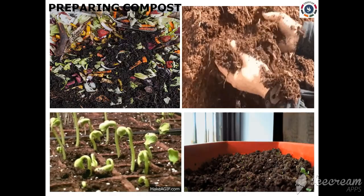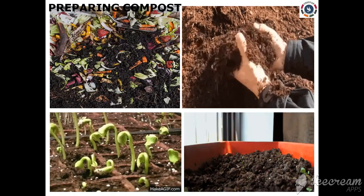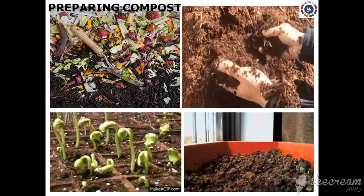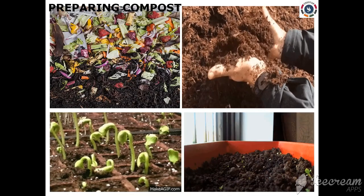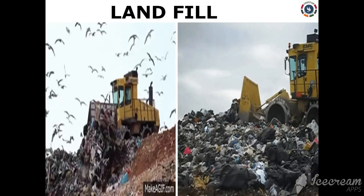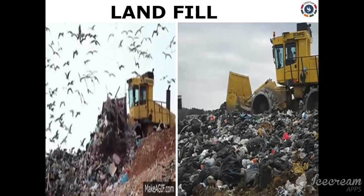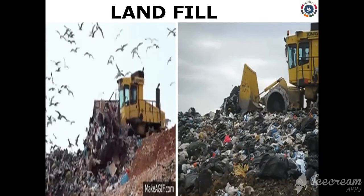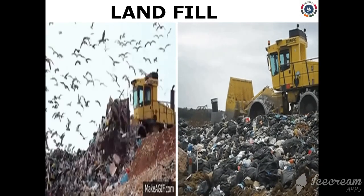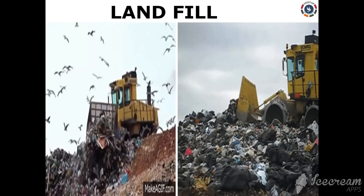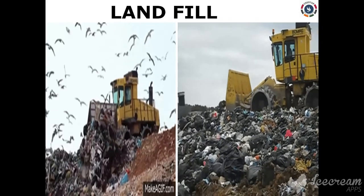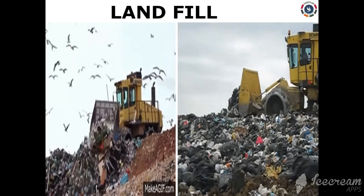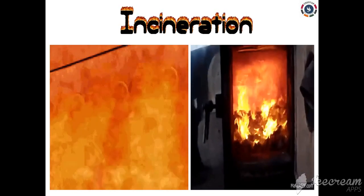The third method is preparing compost. Biodegradable waste like food waste, vegetables, fruits, and leaves of potted plants can be converted into compost and used as manure for plant growth. The fourth method is landfill, also called dumping. The dumping of solid waste is done into a low-lying area where it is compacted and covered with a layer of ethylene or bleaching powder to reduce the chances of stinking and spreading of diseases.